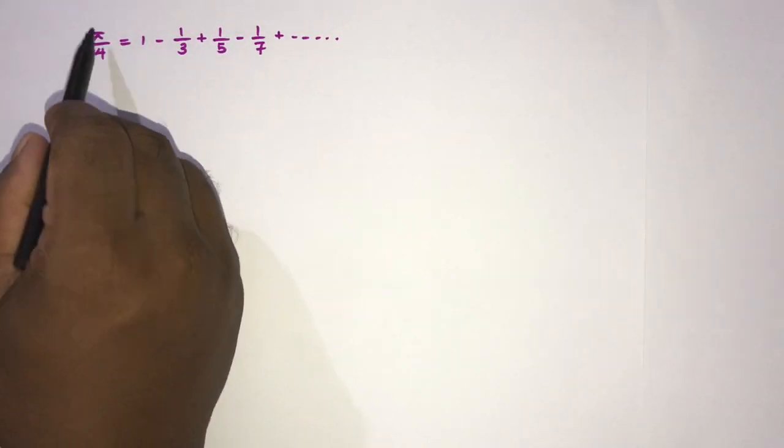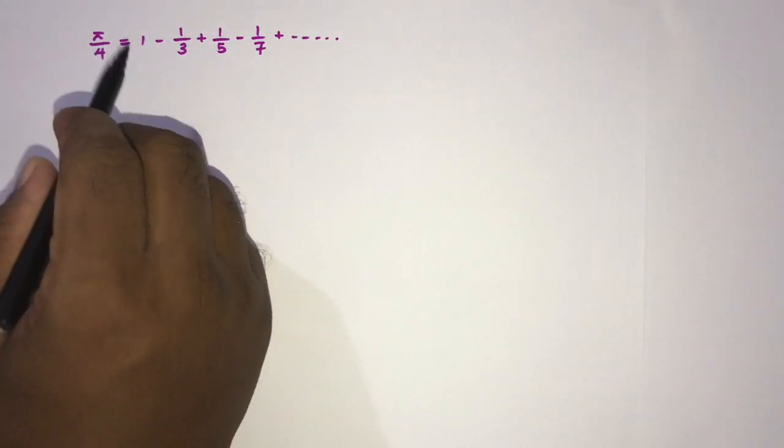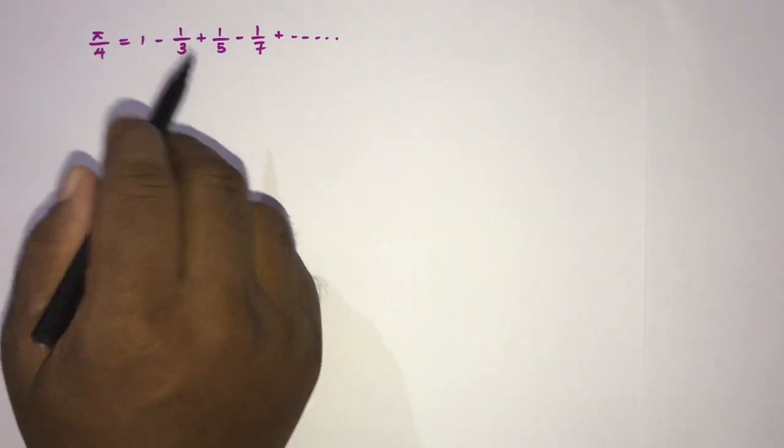Welcome to the Mathematics and My channel. In this video we are going to prove Leibniz formula for pi: pi over 4 is equal to 1 minus 1 over 3 plus 1 over 5 minus 1 over 7, and so on. We have several methods to prove this identity, and in this video I am going to use the complex definition of Fourier series.